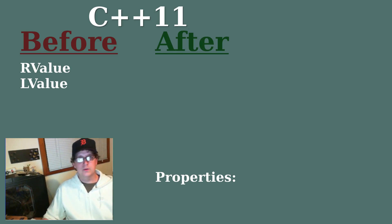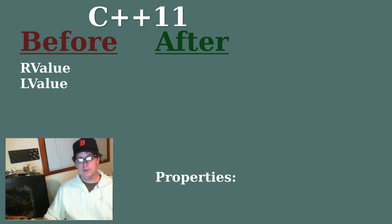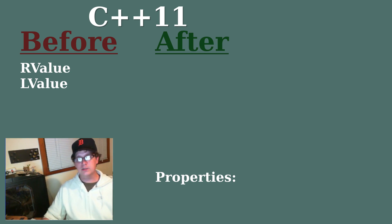It's important to note that the terminology used for value categories changed in C++11. Prior to C++11 there were just R values and L values, and we still have those today, but there are three additional ones. The properties which they identify are a little bit more clear-cut now. There are basically two properties that you want to be aware of.